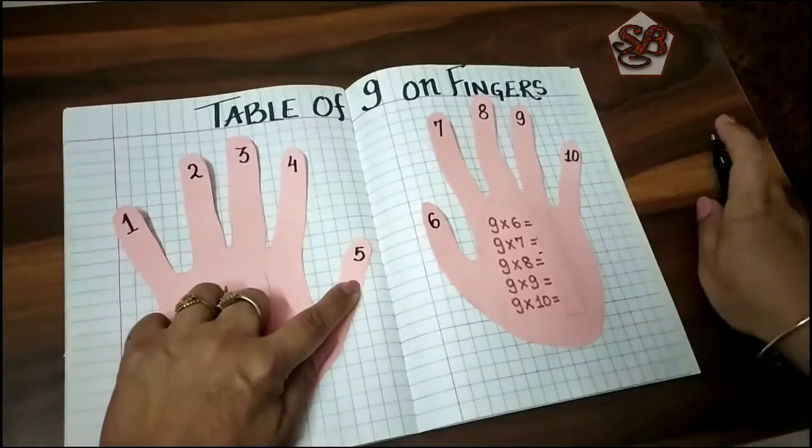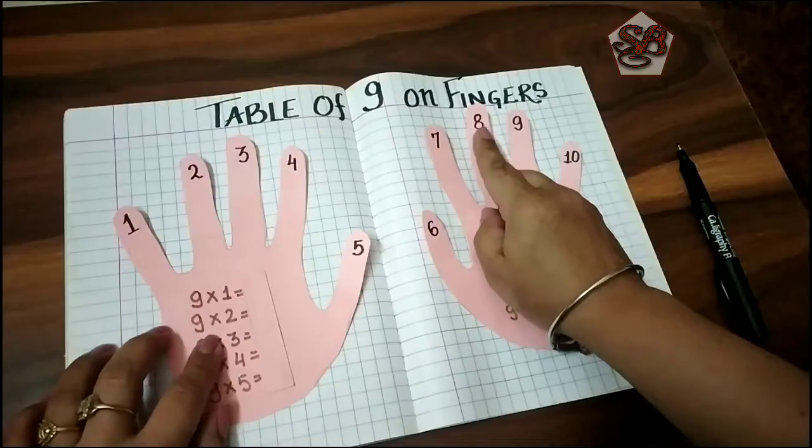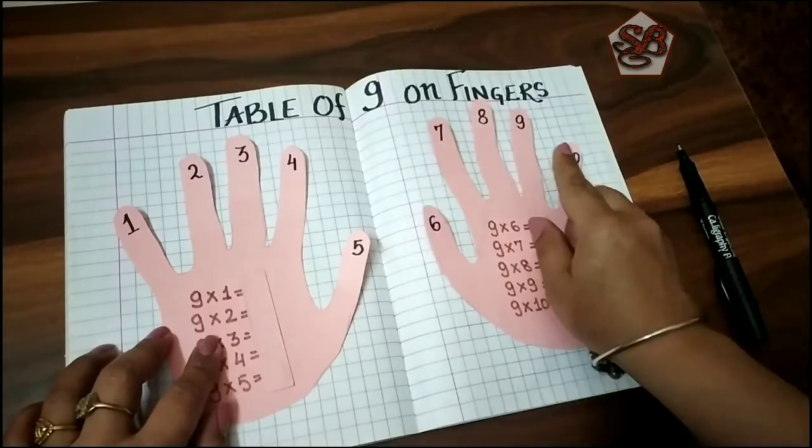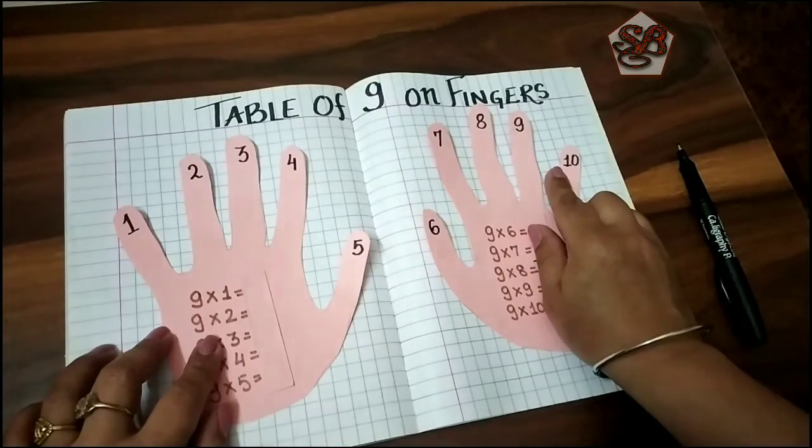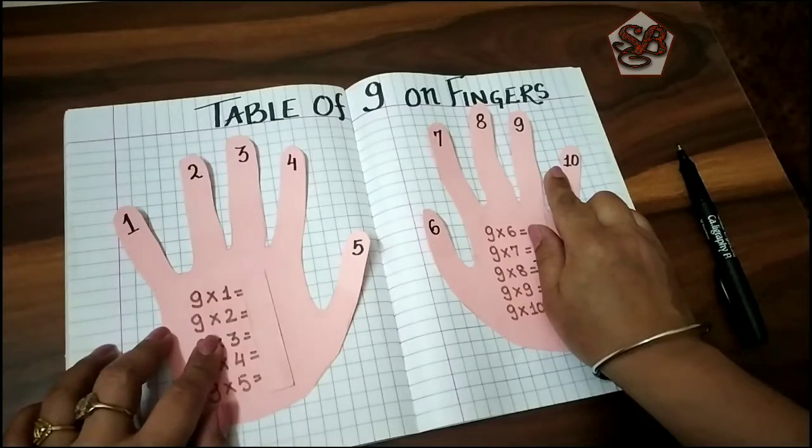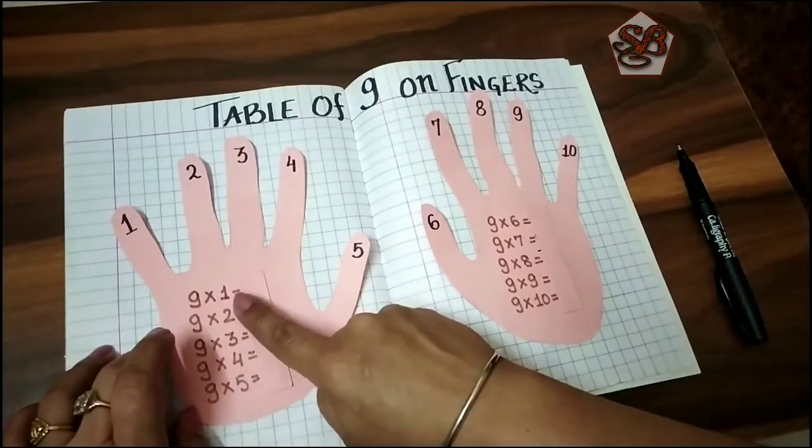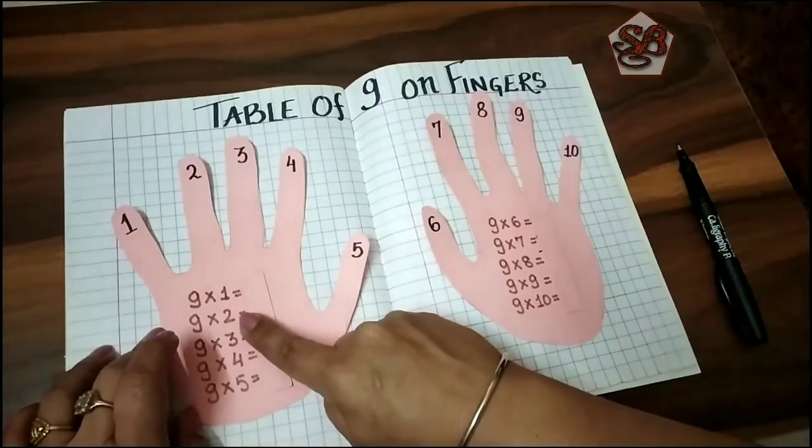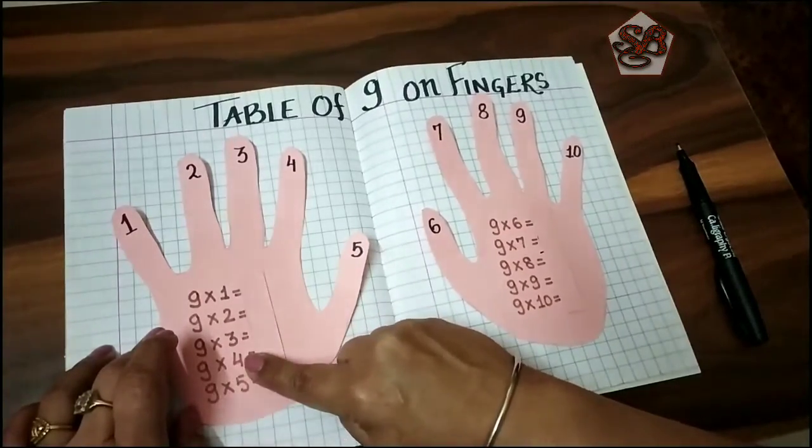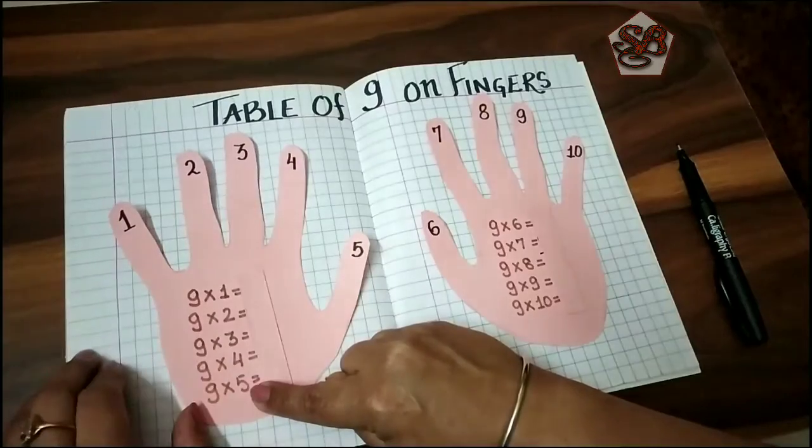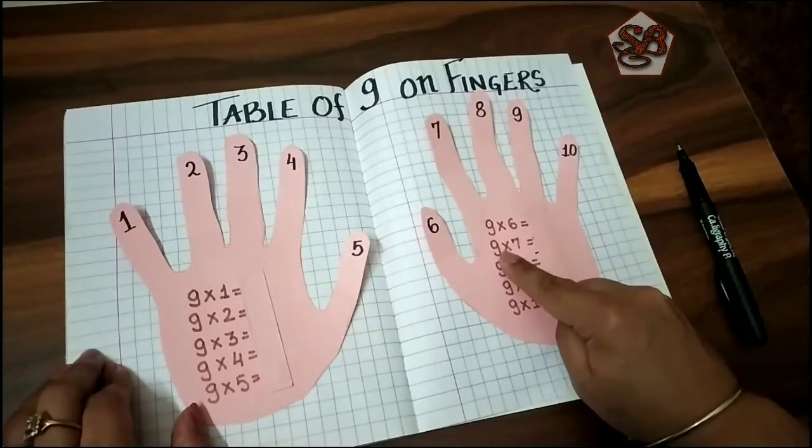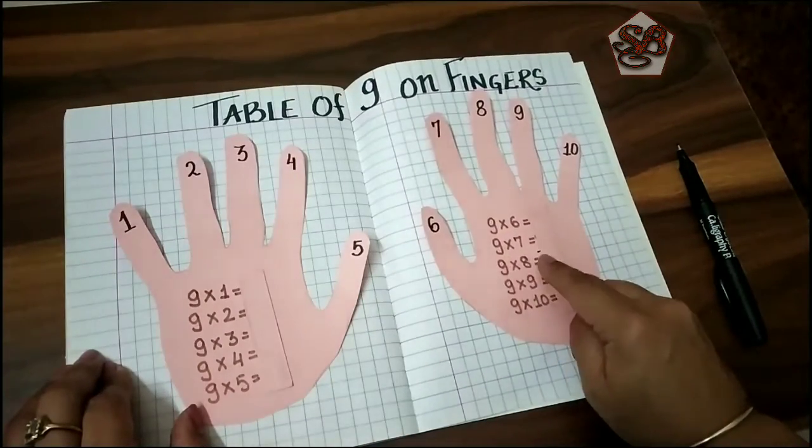When we begin a table we always begin like this: nine ones are, nine twos are, nine threes are, nine fours are, nine fives are, nine sixes are, nine sevens are, nine eights are, nine nines are, and nine tens are.